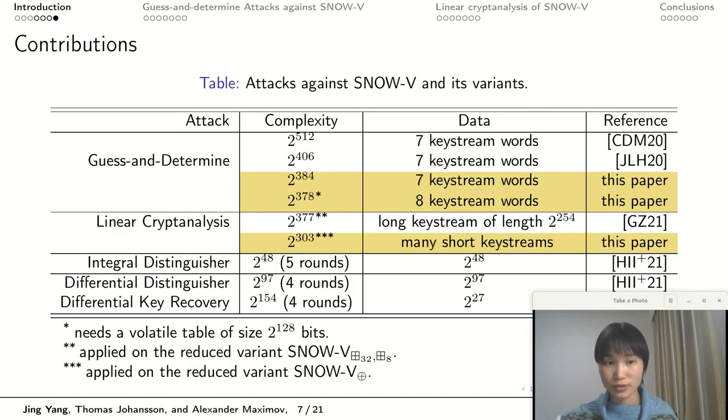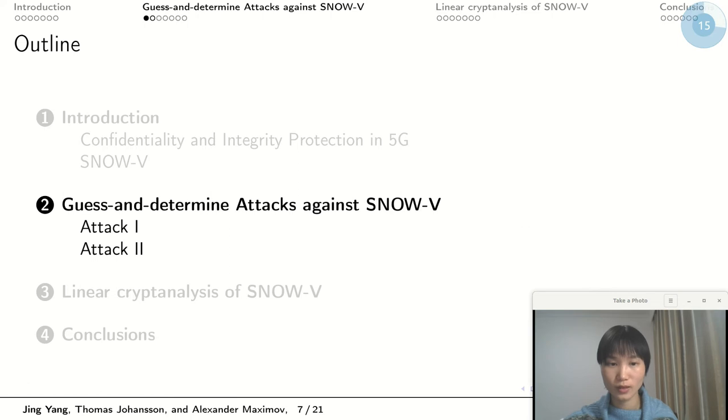Since SNOW-V has been published, there appeared some cryptanalysis results which include guess-and-determine attacks, linear cryptanalysis, integral attacks, differential attacks, and so on. In our paper, we proposed two guess-and-determine attacks of complexity 2 to the power of 384 and 2 to the power of 378, which are lower than existing results. We also proposed a distinguishing attack against a simplified version of SNOW-V with complexity 2 to the power of 303. One advantage of a distinguishing attack is that it does not need long keystreams but only needs many short keystreams.